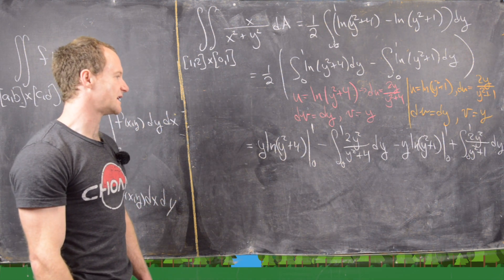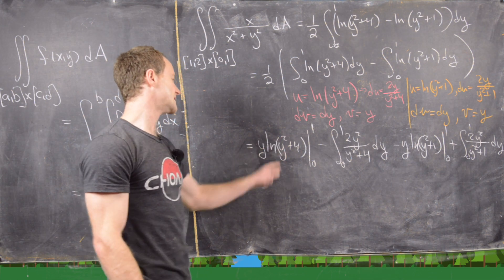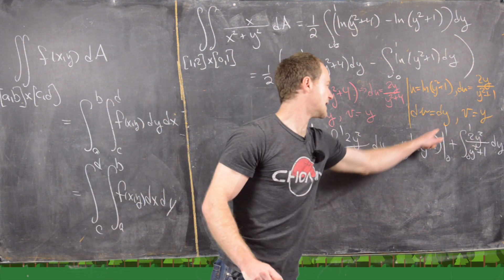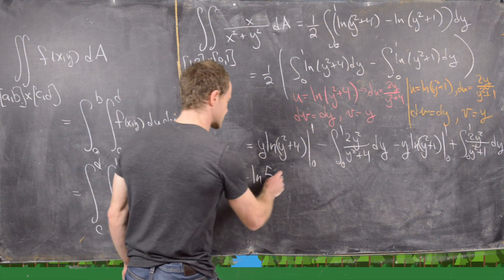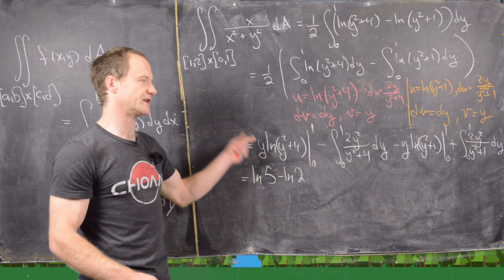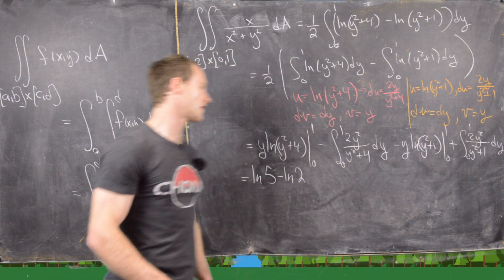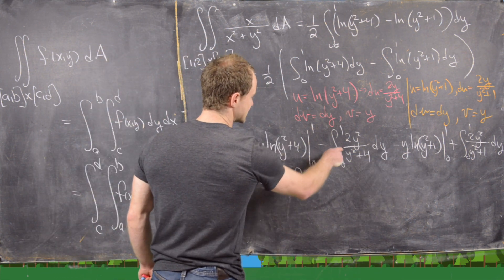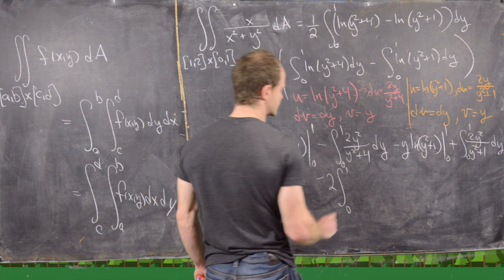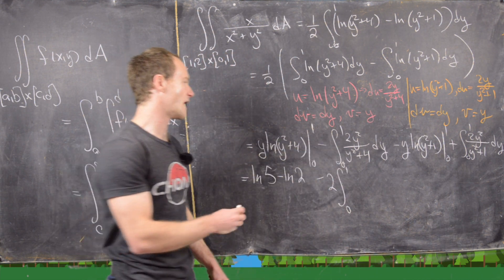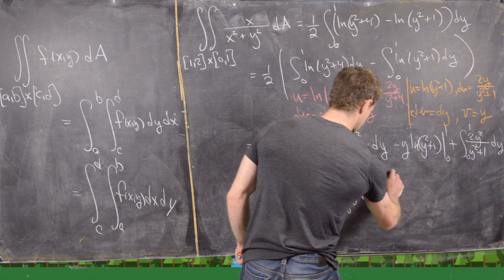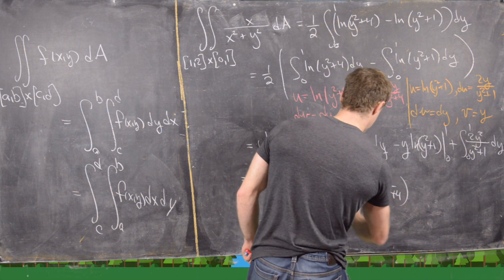Plugging in 1 gives ln(5) from the first term; plugging in 1 gives ln(2) from the second term. Plugging in 0 gives 0 in both cases since y is 0. For the remaining integrals, we rewrite: 2y²/(y² + 4) as 2 times (y² + 4)/(y² + 4) minus 4/(y² + 4), and similarly 2y²/(y² + 1) as 2 times (y² + 1)/(y² + 1) minus 1/(y² + 1), which makes taking the antiderivative easier.